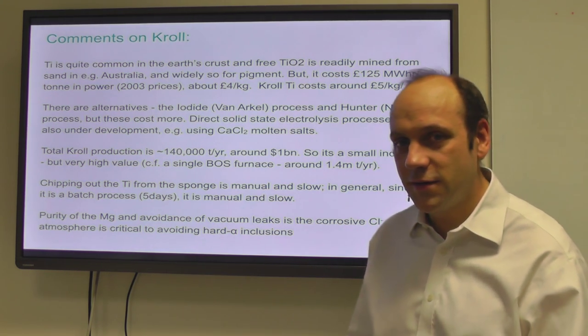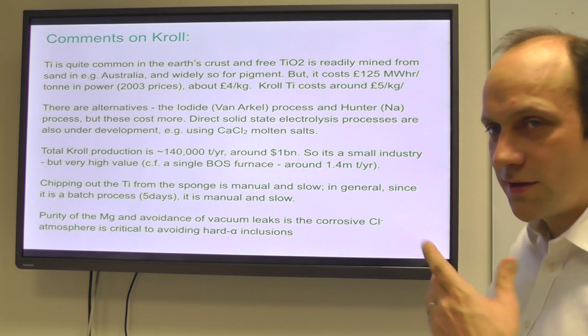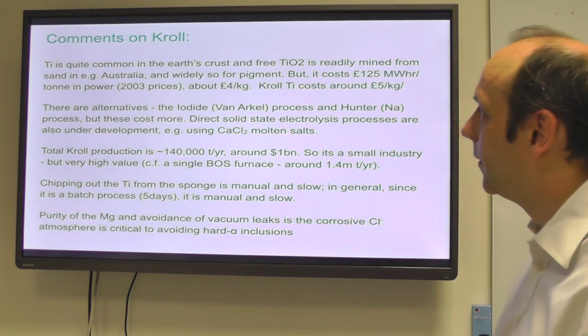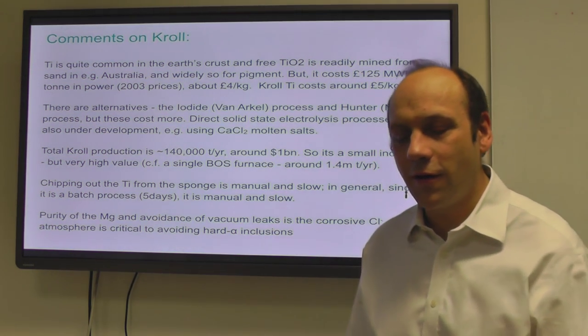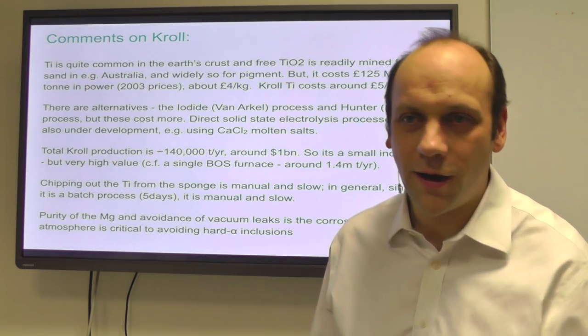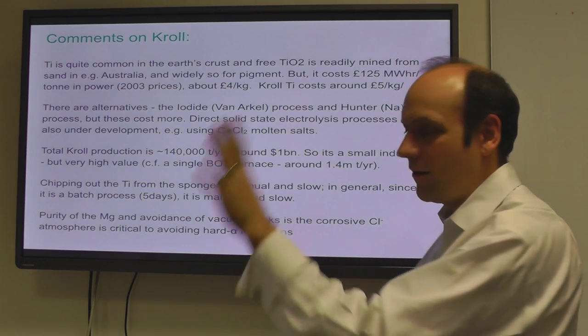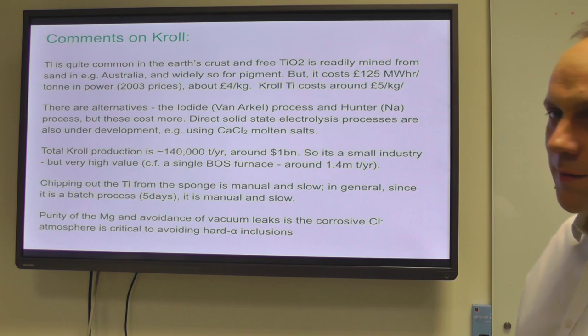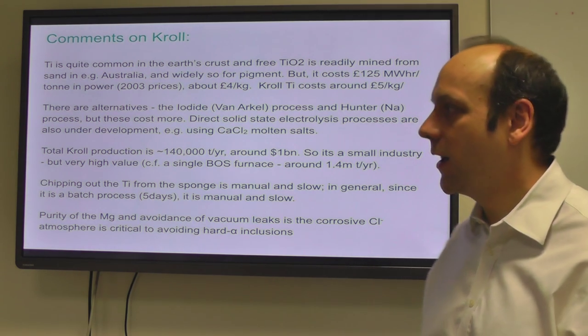The total Kroll production of titanium is something like 140,000 tonnes a year, which is about one to two billion dollars worth of titanium. It's a small industry in tonnage but very high value. A single blast furnace, such as you would find in Llanwern or Clydebank in South Wales, produces 200 tonnes at a time multiple times a day. A single blast furnace will produce something like 1.5 million tonnes a year of steel at a price of 100-200 dollars a tonne. The price is dramatically different, more than an order of magnitude difference between titanium and steel. Consequently, titanium is a small niche product. We only use titanium when we absolutely have to.